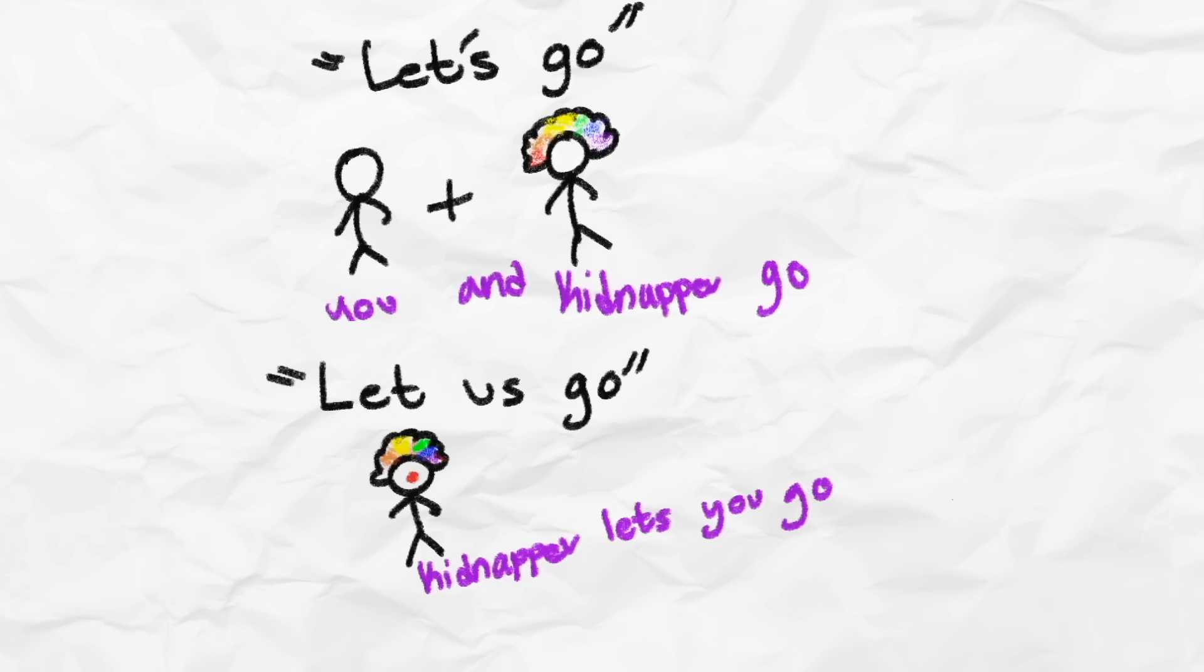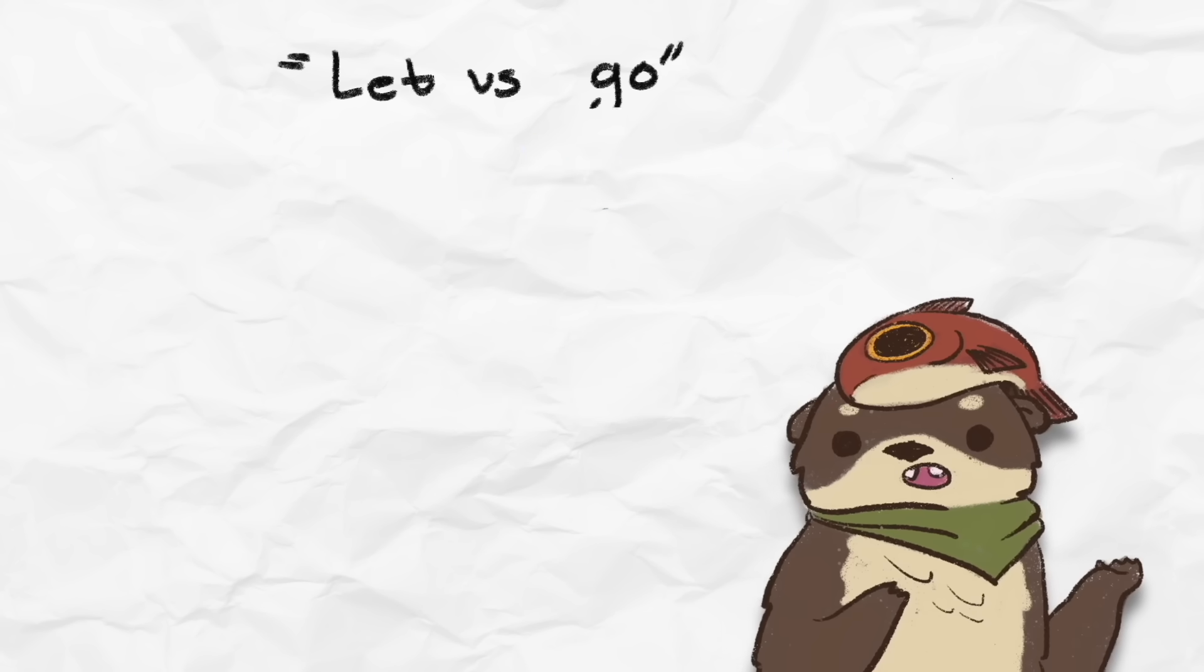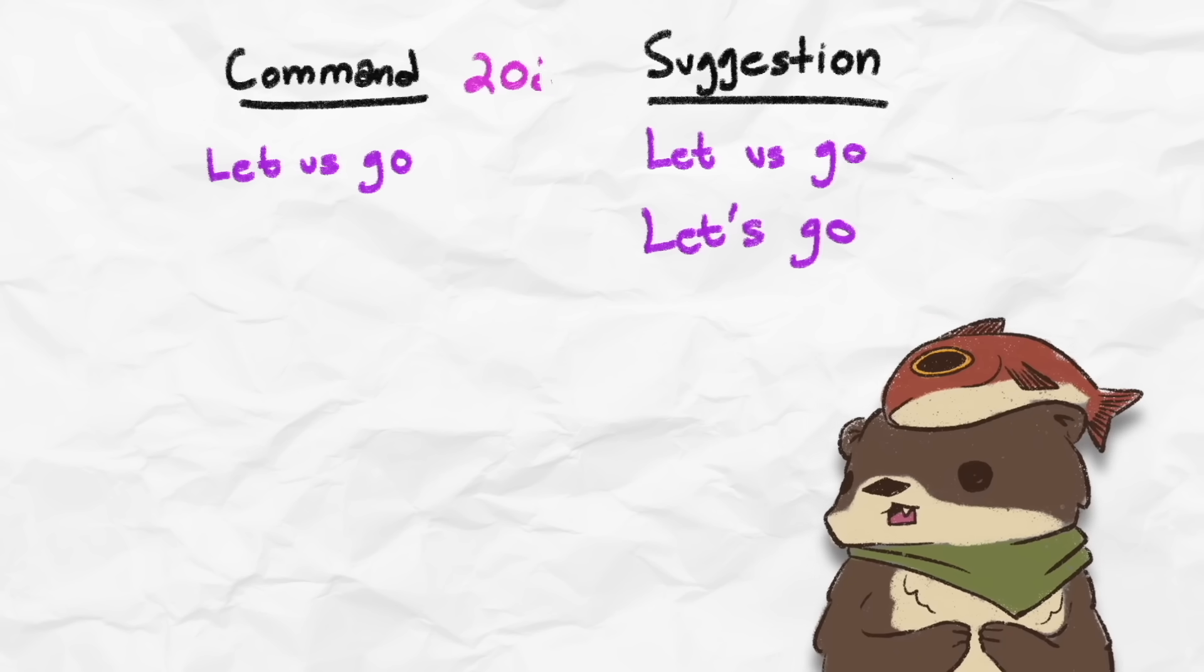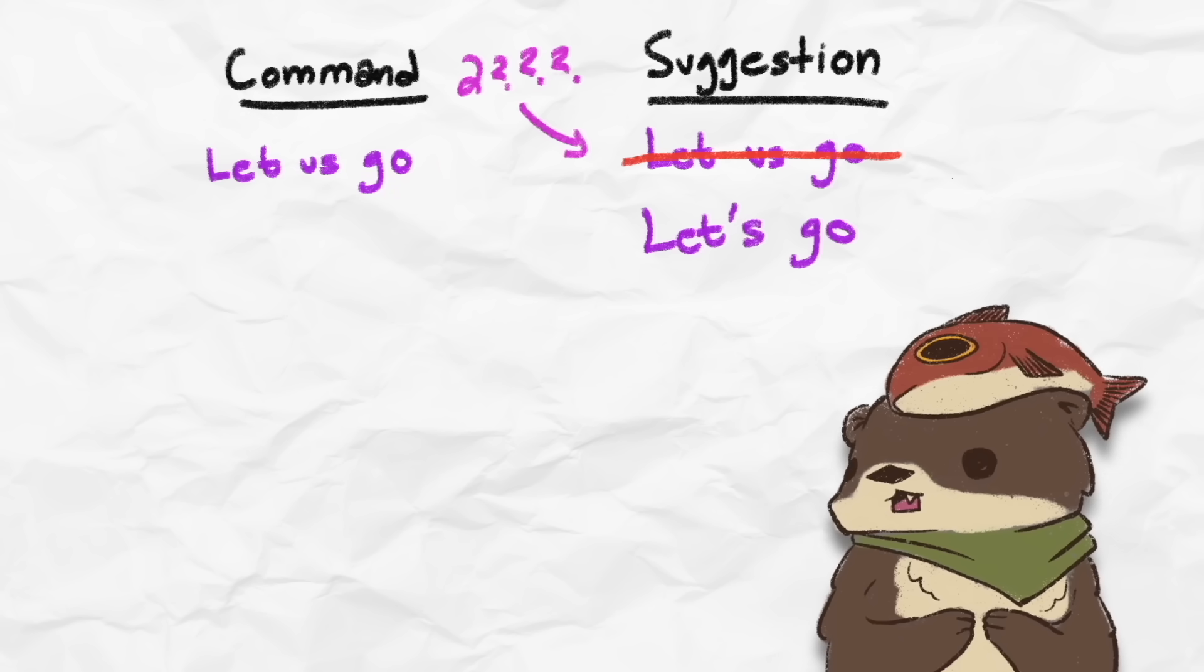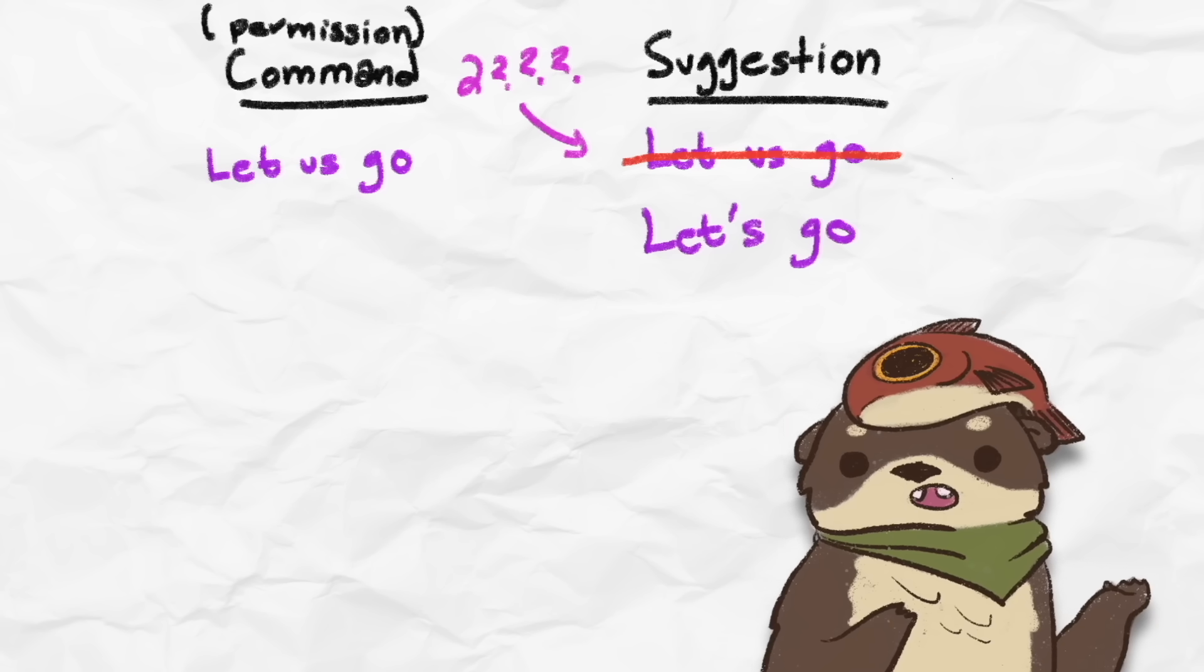If you say let's go, you're giving a suggestion to the kidnapper of what you yourself and the kidnapper should do, which is to go. Of course, the full phrase let us go can also be used as a suggestion, but it sounds really formal now. In terms of how this will evolve in the future, I can see let us losing its suggestion meaning, as let's becomes the dominant form used for giving suggestions. We will still use let us, of course, but only for asking for permission.